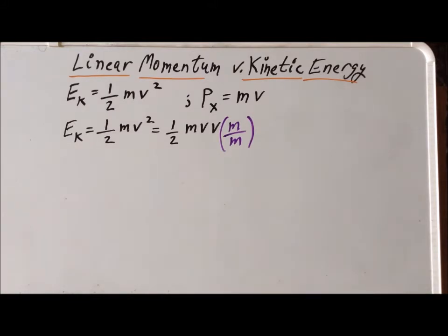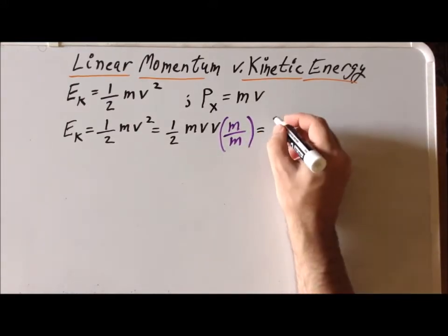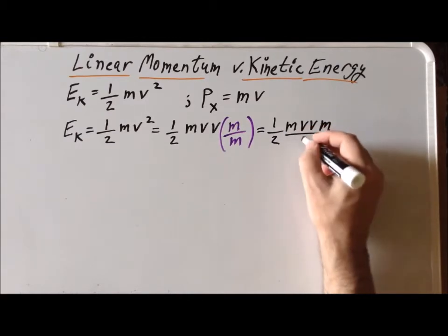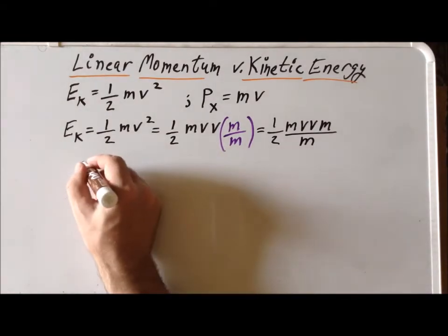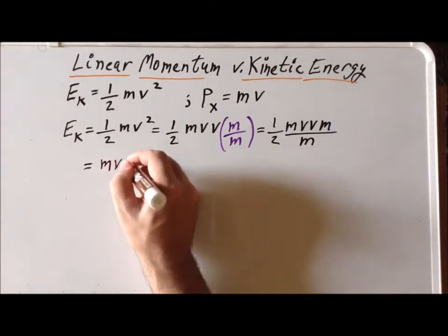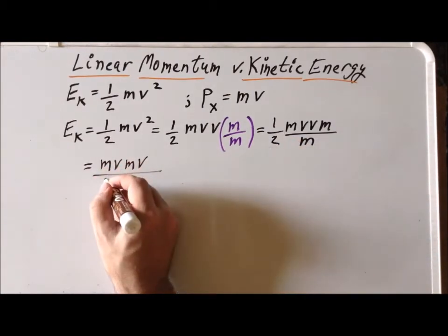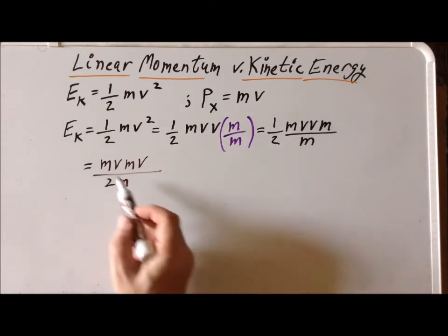Now so long as the mass is not equal to zero, this is a legitimate way to write the number one. So once we've done that, we have one-half times m times v times v times m, all divided by m. We can now use the fact that since we're multiplying ordinary quantities here in classical mechanics, these values will commute, so we can write them in any particular order. We're going to write them as mv times mv on the top, and combine the one-half by putting a 2 in the denominator times the m in the denominator.